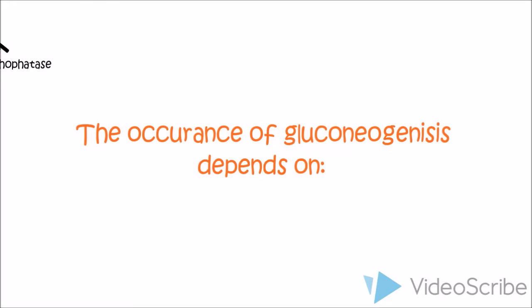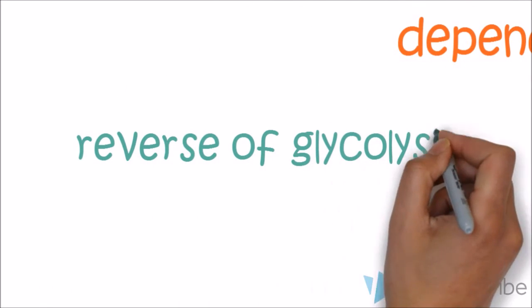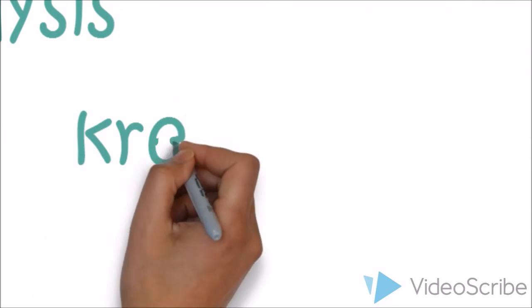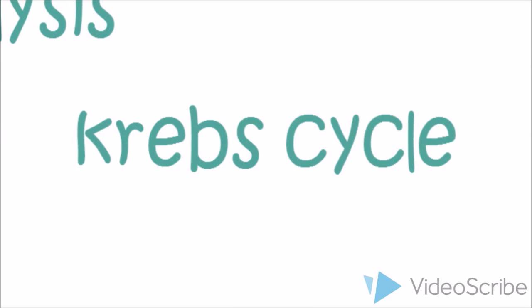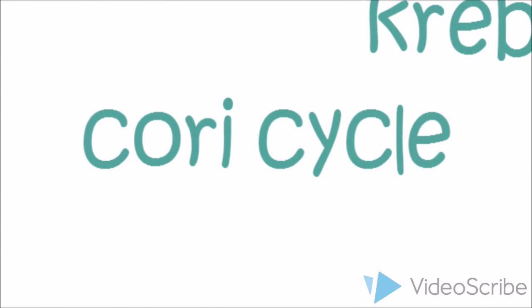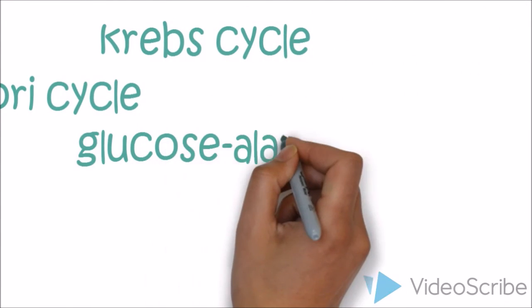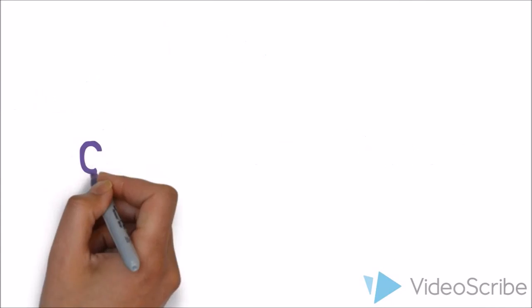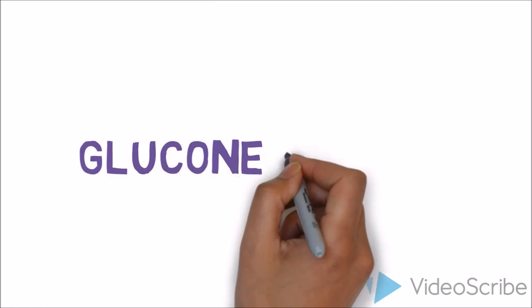The occurrence of gluconeogenesis depends on the reverse of glycolysis, the Krebs cycle, the Cori cycle, and the glucose-alanine cycle. These pathways together allow gluconeogenesis to proceed.